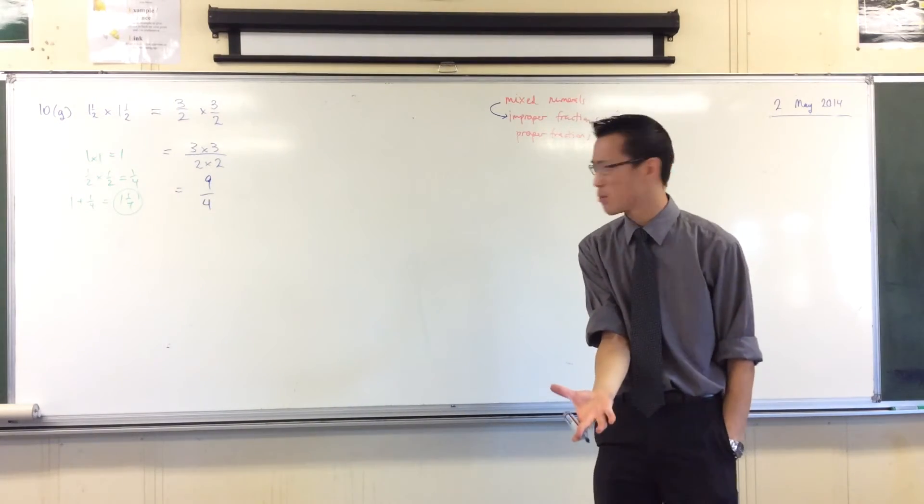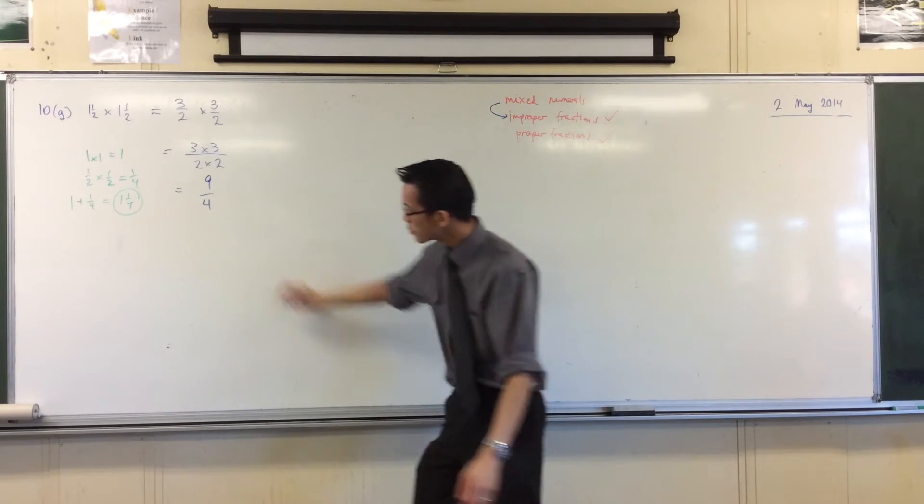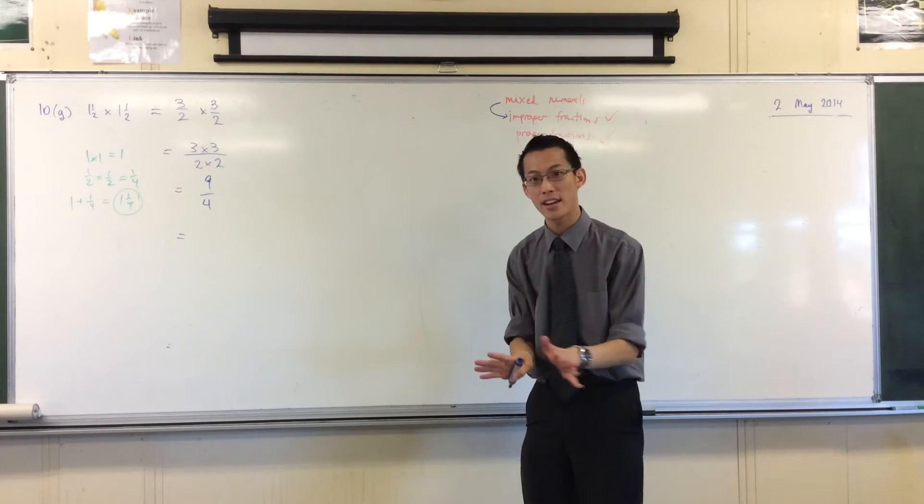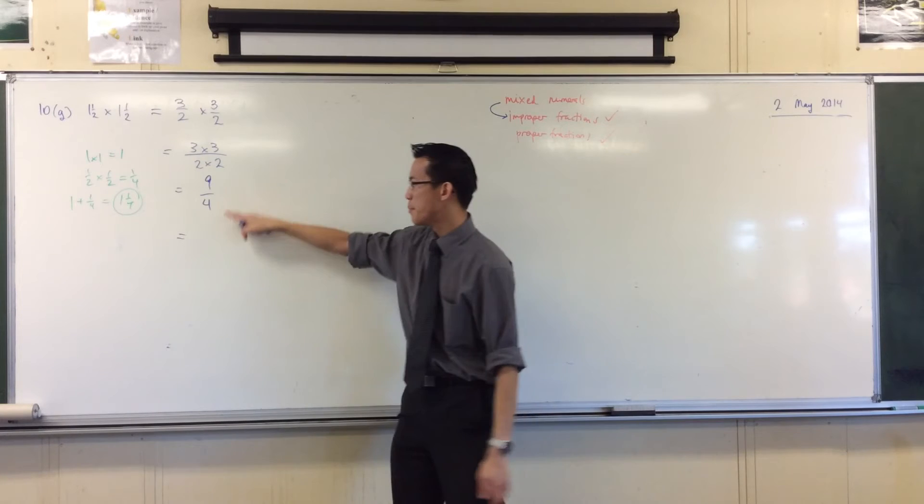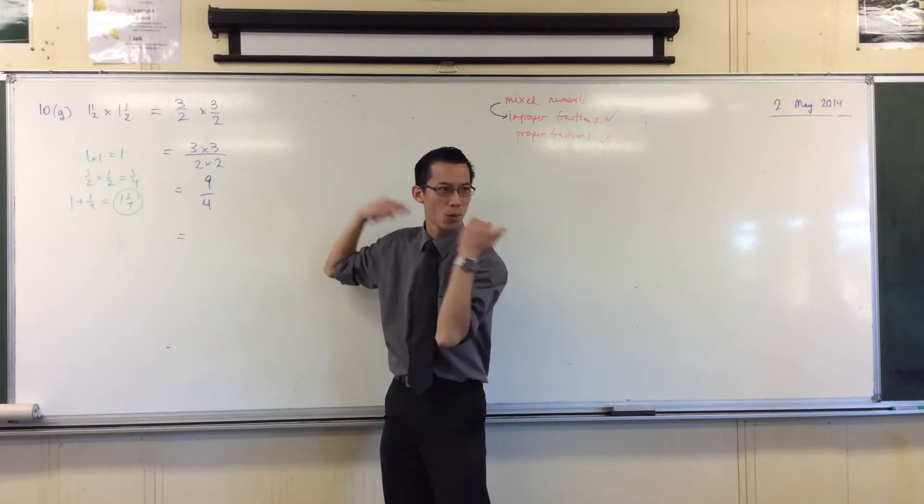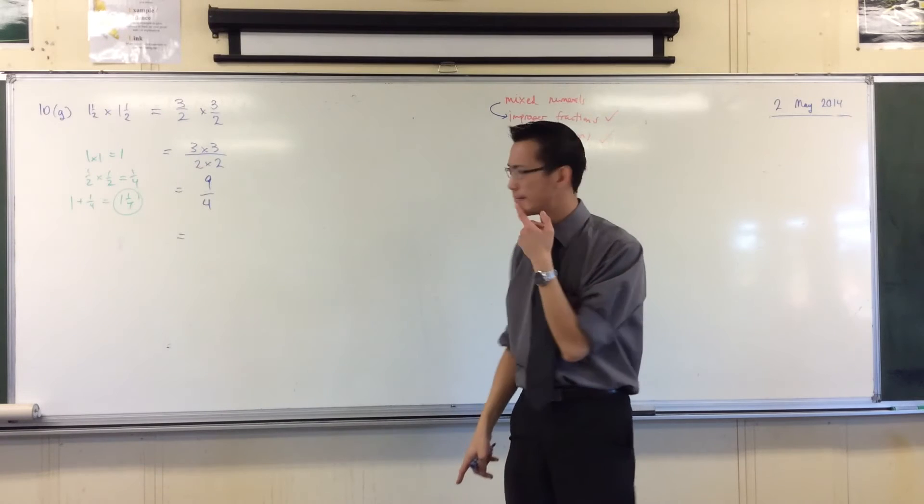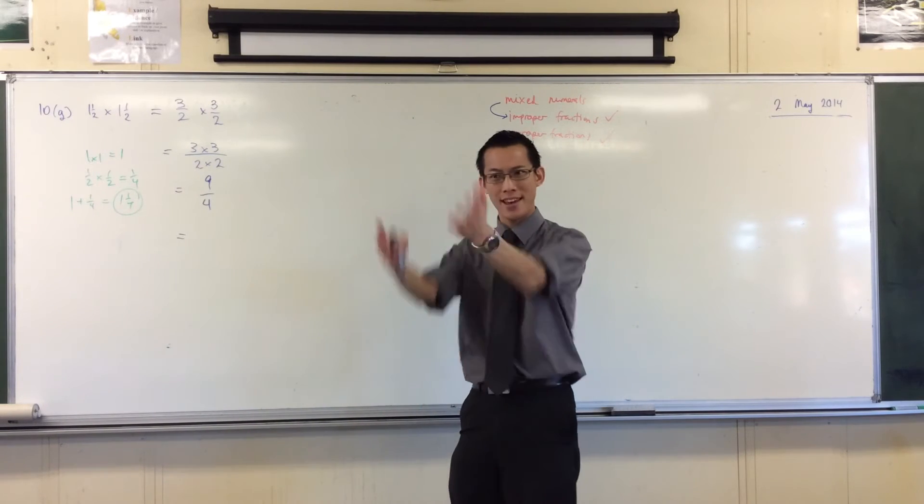But being that they gave it to us as a mixed numeral, we should probably give it back as a mixed numeral as well. So some of you will be able to convert this directly to a mixed numeral, which is great. For those of you who maybe can't see it straight away, what intermediate line could I put in here to help me work out what mixed numeral it's equivalent to? What could I do?